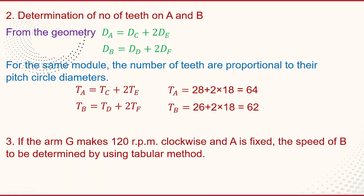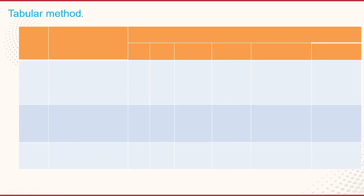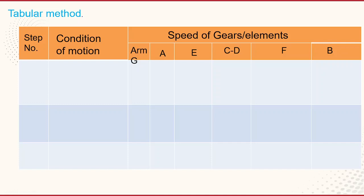If arm G makes 120 RPM clockwise and A is fixed, the speed of B is to be determined using the tabular method. NG equals minus 120 RPM because it is clockwise, and NA equals 0. Now draw the table: first column is step number, second is condition of motion, and the remaining columns are revolution of elements — Arm G, Gear A, Gear E, Compound Gear C and D, Gear F, and Gear B.